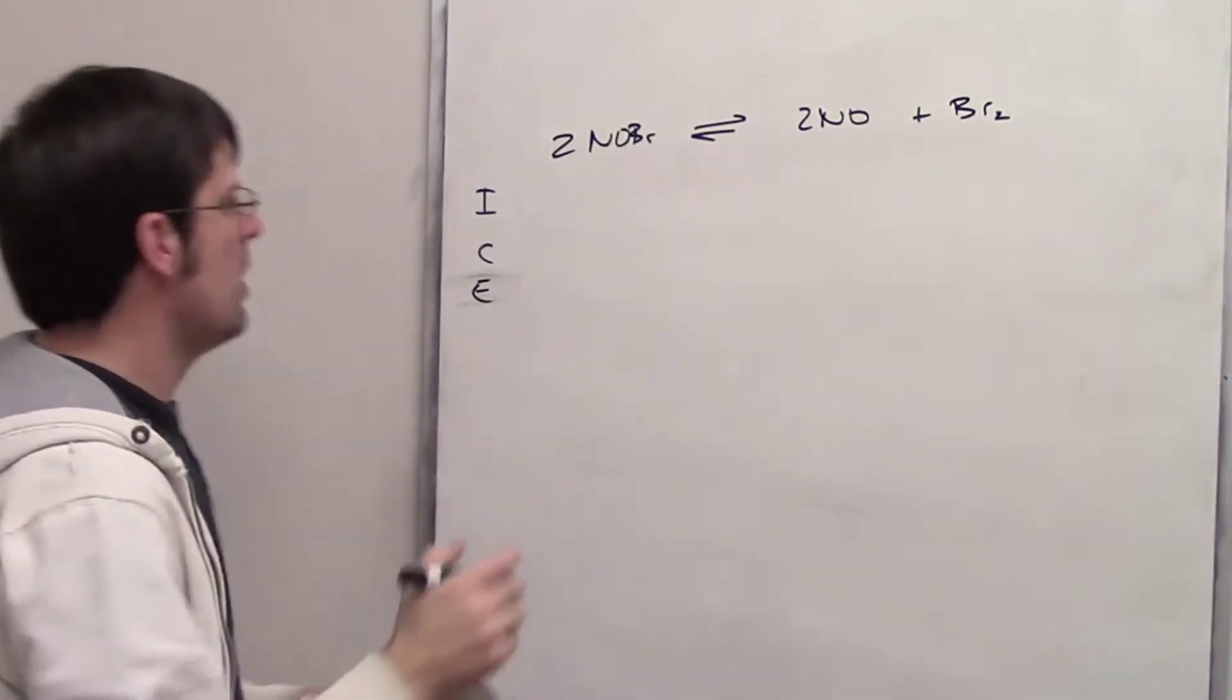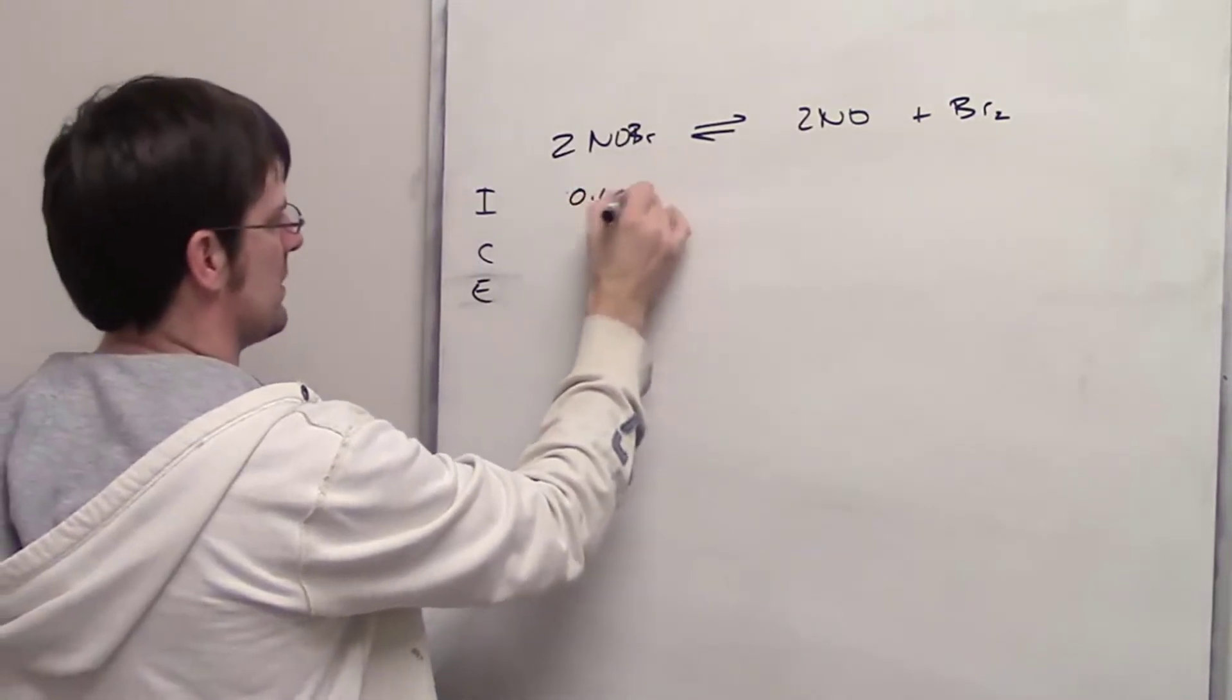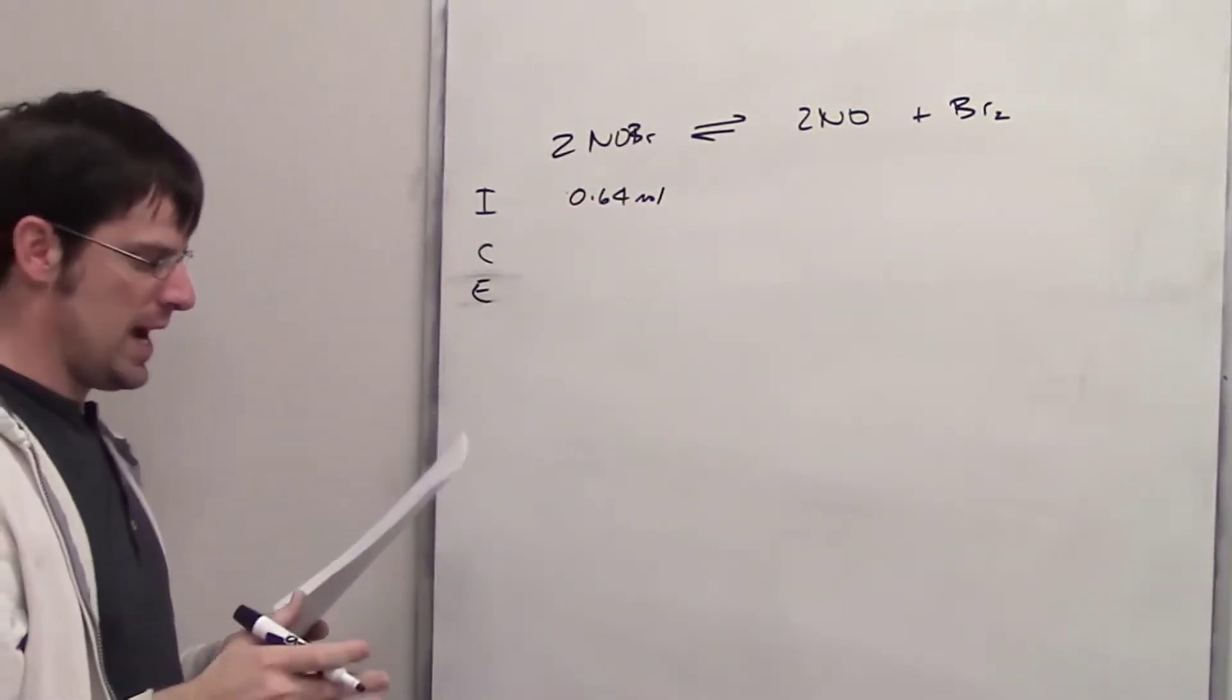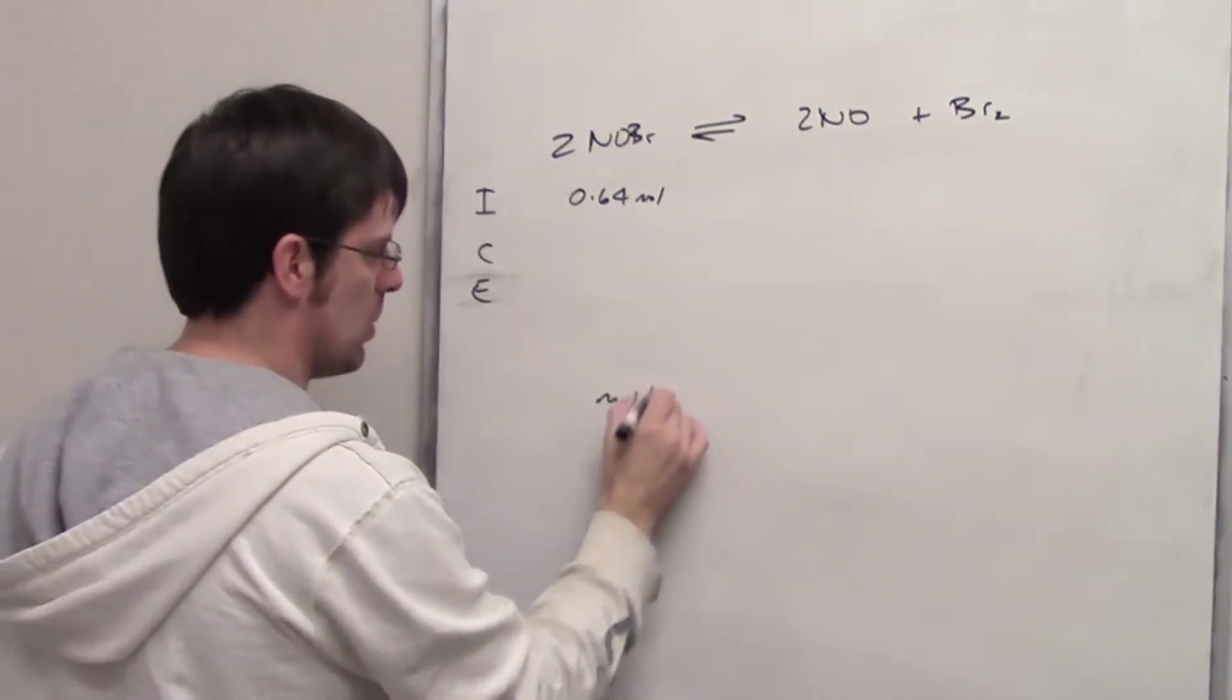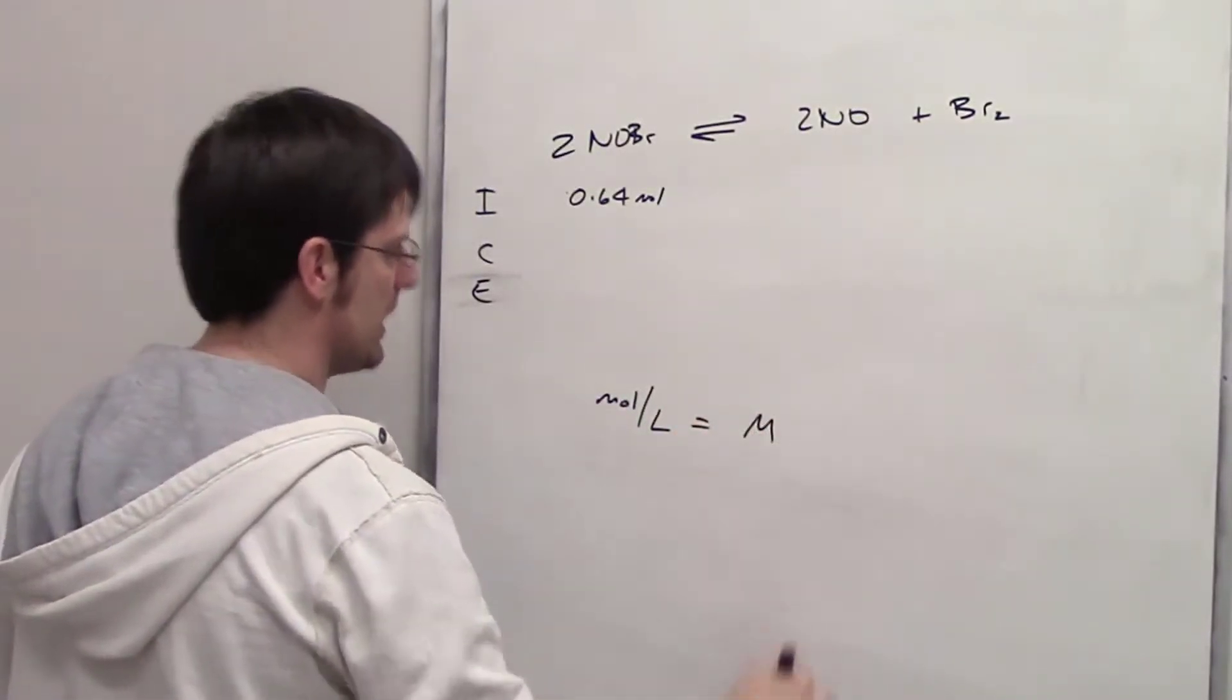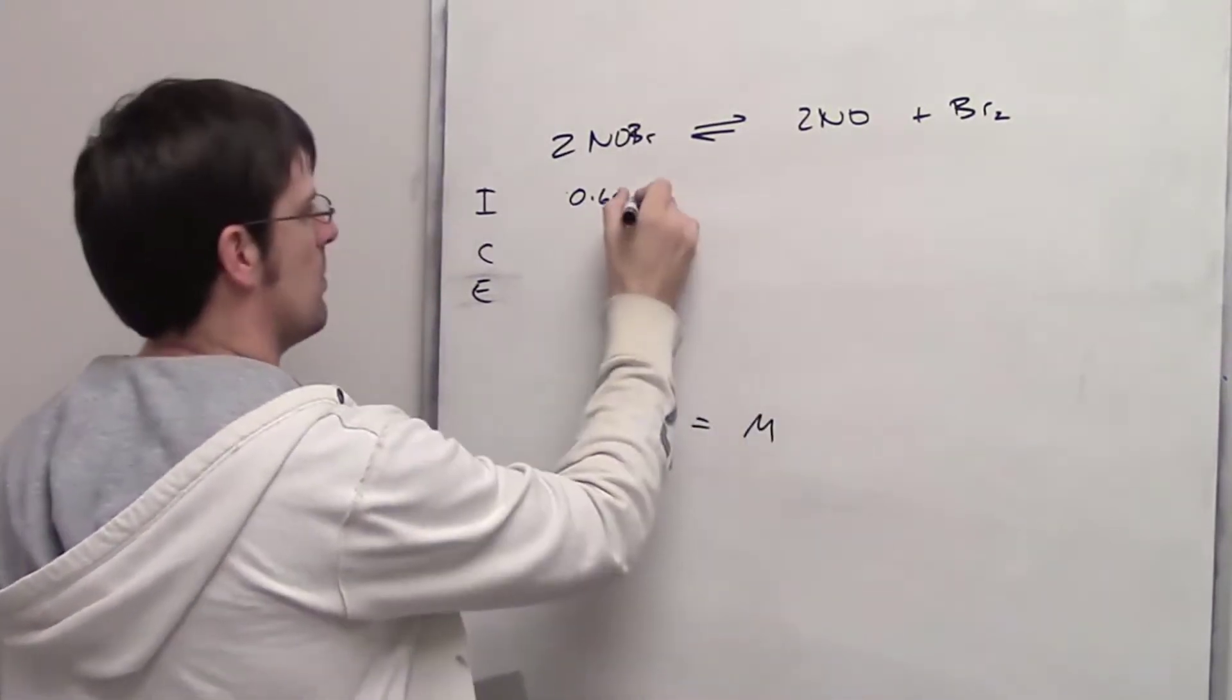A sample of NOBr, I'll call it Nober, with 0.64 moles is placed in a 1-liter flask. Since molarity is moles per liter, if I have 0.64 moles in 1 liter, the molarity is 0.64 divided by 1, which equals 0.64 molar. This is a nice problem.